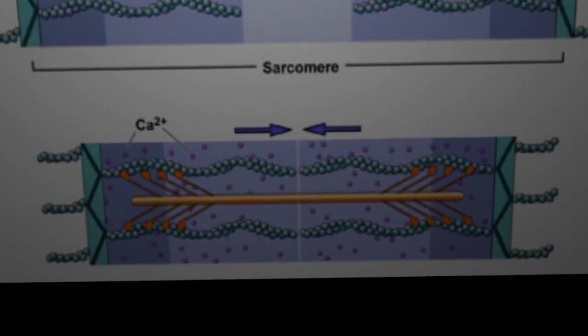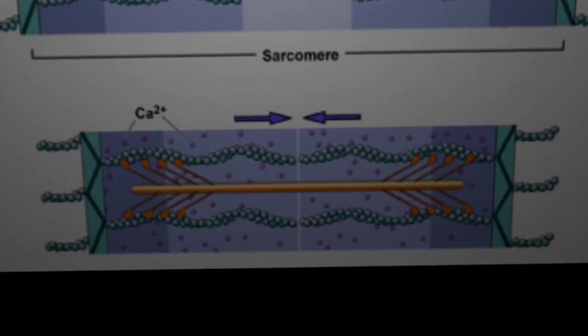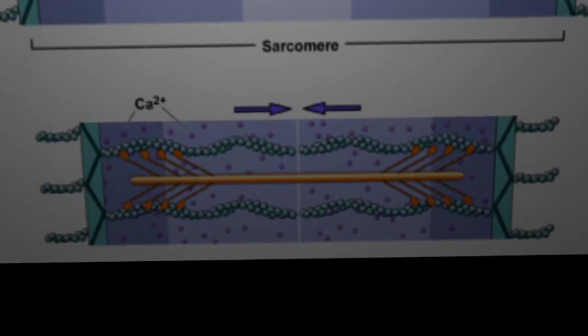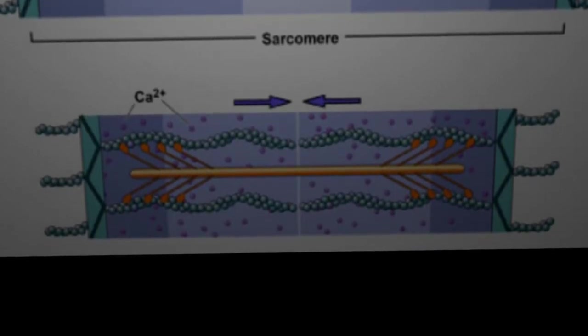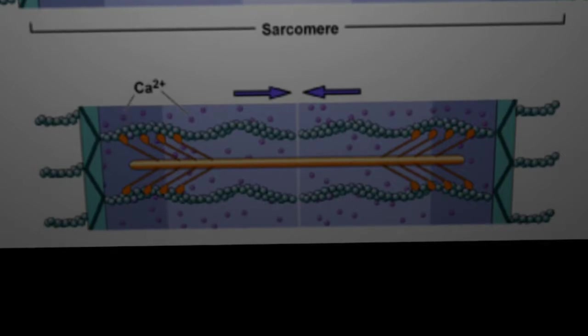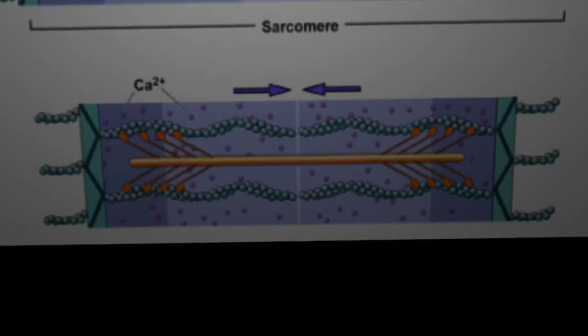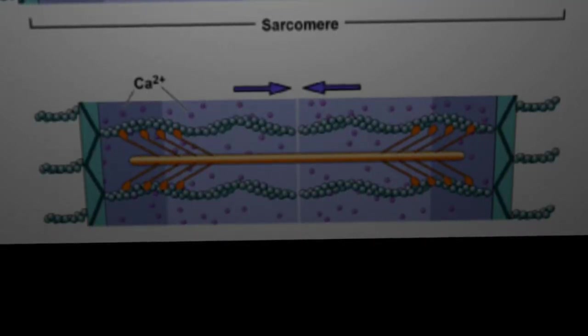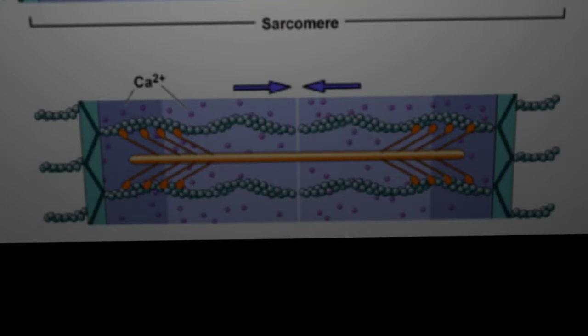When calcium is released from the sarcoplasmic reticulum, the calcium causes the displacement of troponin and therefore exposes actin. Myosin heads bind to the actin and conduct a step-like motion across the filament. The thick and thin filaments slide with respect to one another, using ATP as a source of energy. This sliding together causes the Z-discs to be pulled closer together. Contraction of the whole muscle fiber results from the simultaneous contractions of all the sarcomeres.